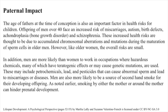Paternal impact. The age of fathers at the time of conception is also an important factor in the health risk for children. Offspring of men over 40 face an increased risk of miscarriages, autism, birth defects, achondroplasia (bone growth disorder), and schizophrenia. These increased health risks are thought to be due to accumulated chromosomal aberrations and mutations during the maturation of sperm cells in older men. However, like older women, the overall risks are small. In addition, men are more likely than women to work in occupations where hazardous chemicals — many of which have teratogenic effects or may cause genetic mutations — are used, including petrochemicals, lead, and pesticides that can cause abnormal sperm and lead to miscarriages or diseases. Men are also more likely to be a source of secondhand smoke for their developing offspring. Smoking by either the mother or around the mother can hinder prenatal development.